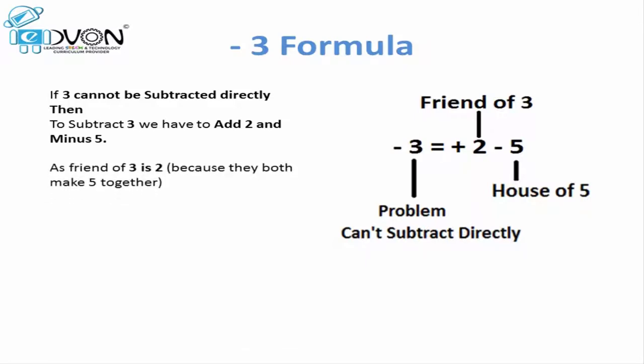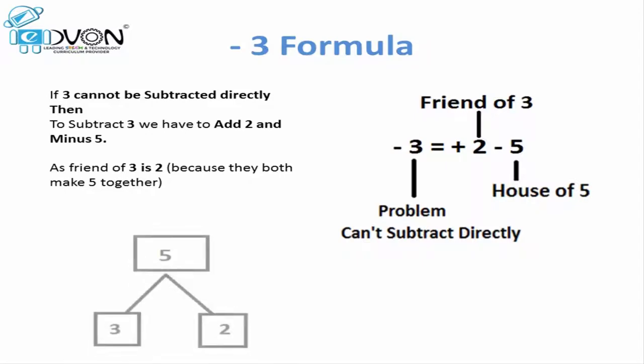Why 3 and 2? Because if we add 3 and 2 together they make 5, so they both are friends of each other.